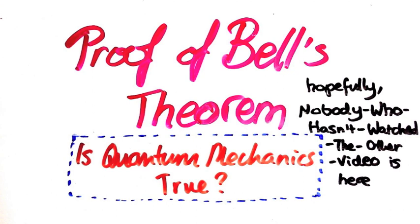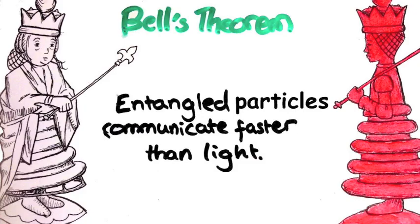So hopefully nobody who hasn't watched the other video is still here. Remember that what we wanted to prove today is Bell's theorem: that entangled particles communicate to each other faster than light. Before I start on the details of the proof, I'll explain the main idea.